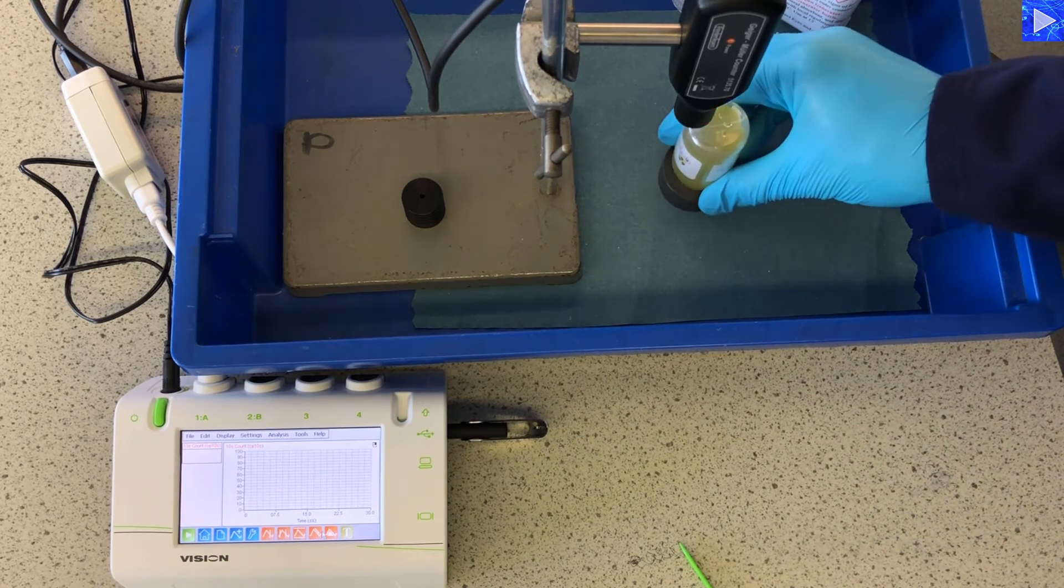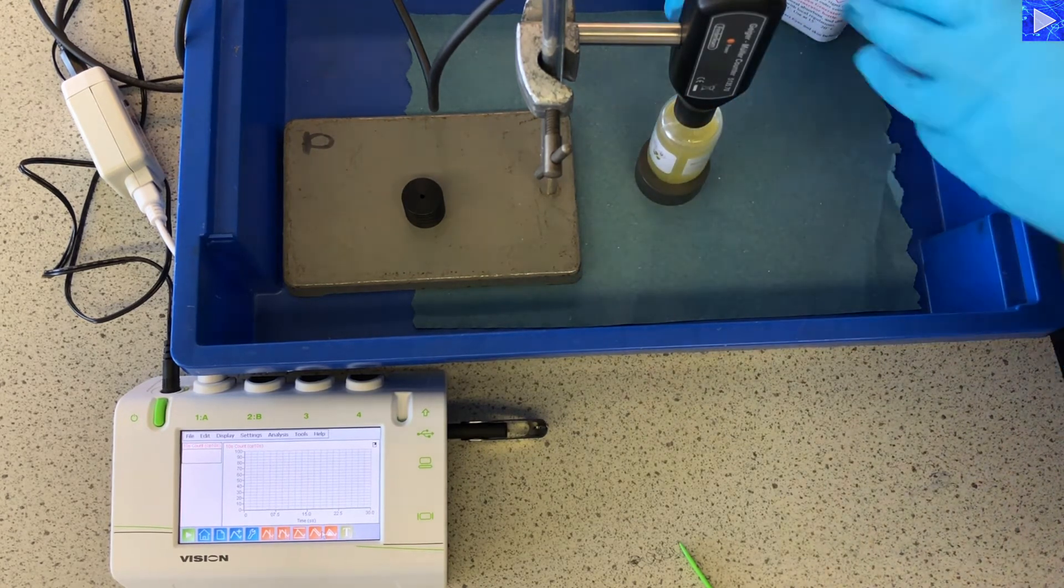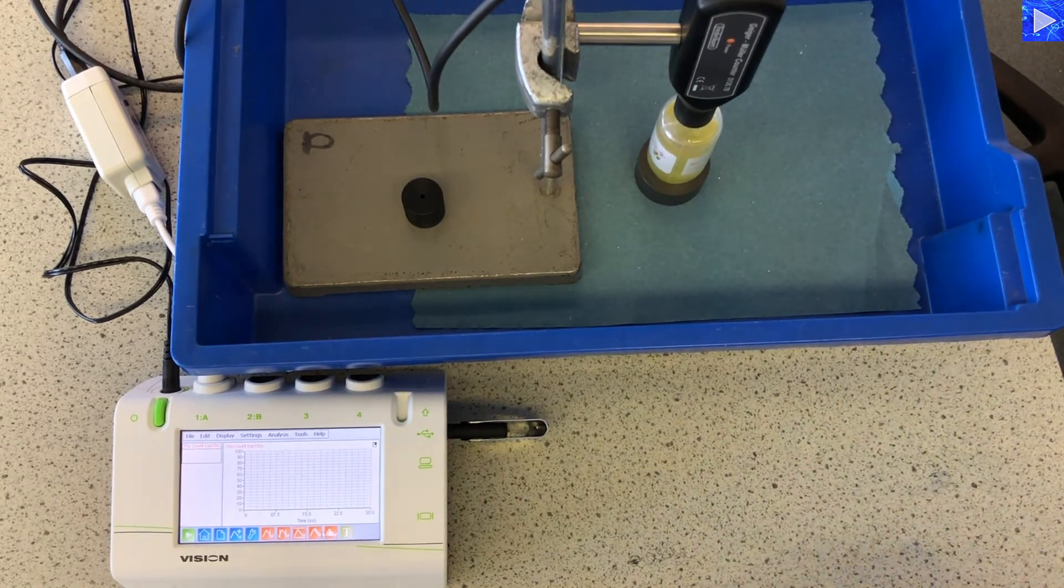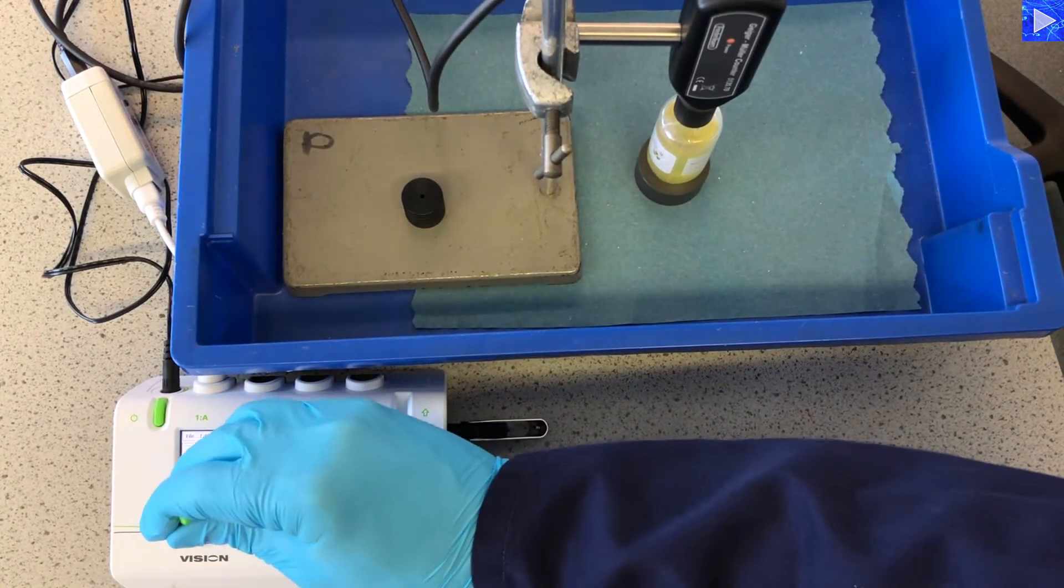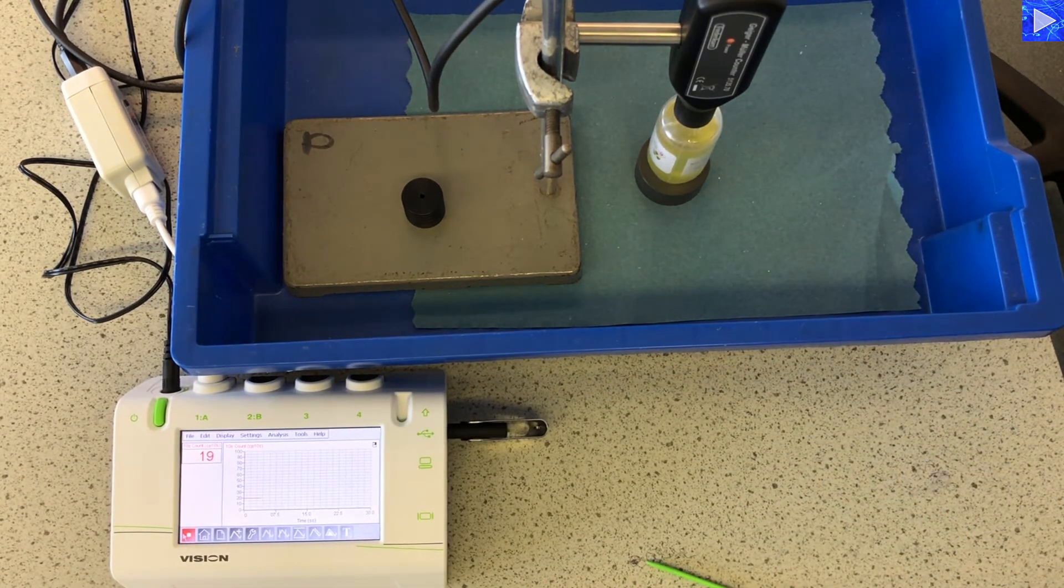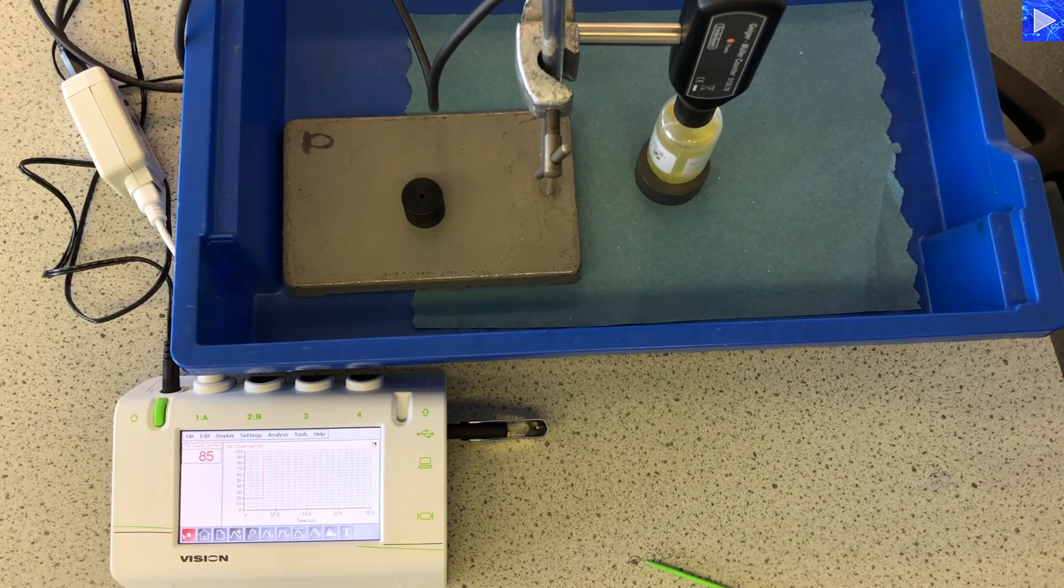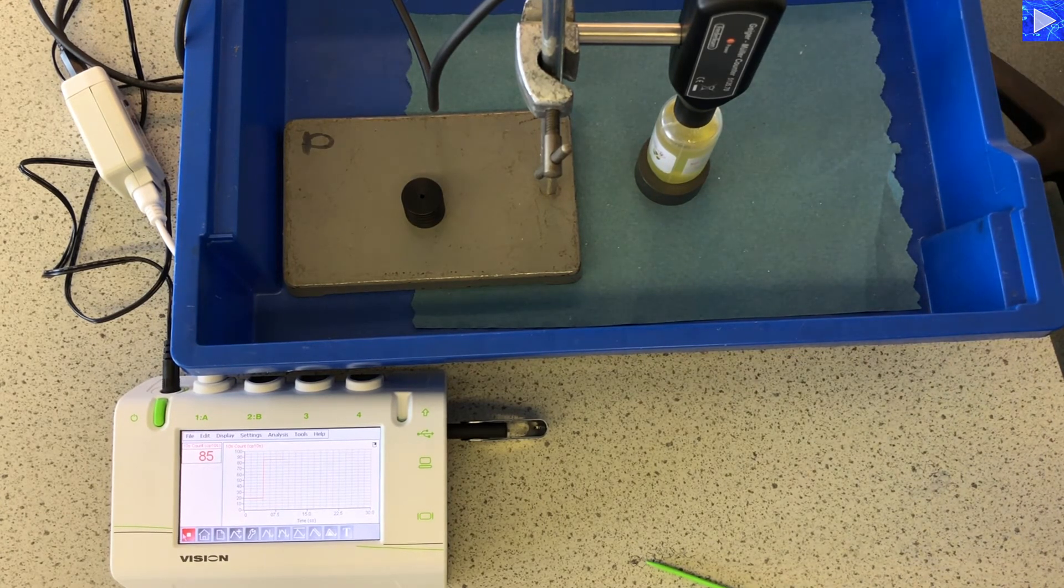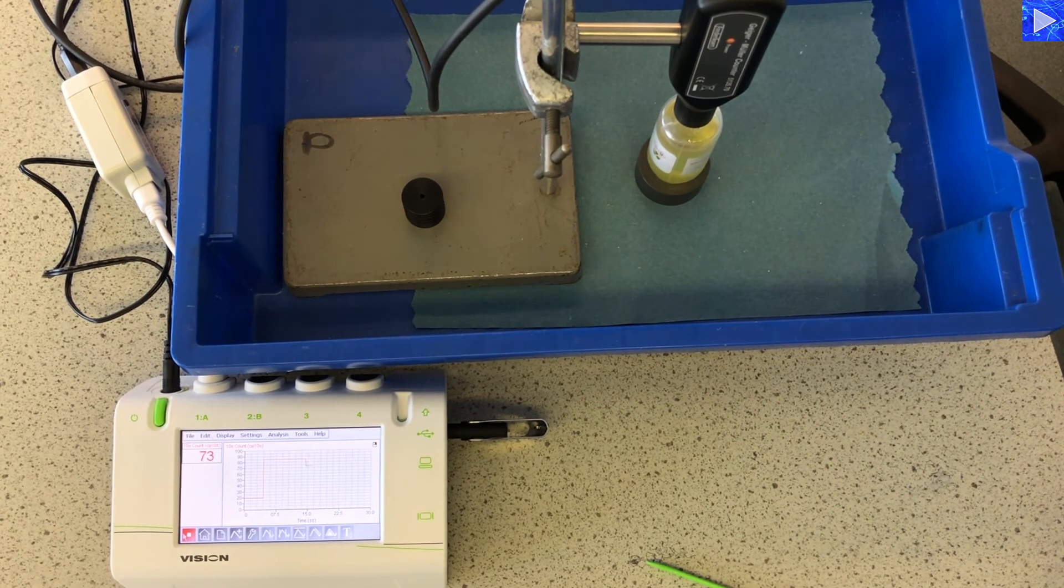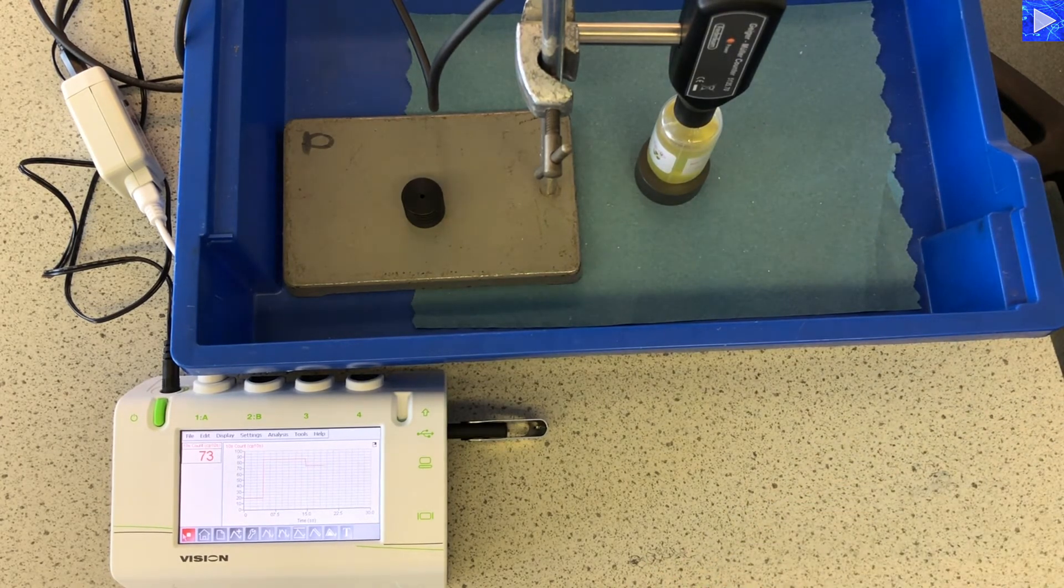So if I place that under the GM tube, you'll notice the count has started to increase already. If I start this recording, it's going to at the beginning give us an increasing reading. That's because more of the protactinium is floating to the top and being presented to the GM tube. But then it will start to decrease due to the protactinium decaying. That's what we're looking for.